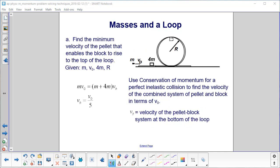Find the minimum velocity of the pellet that enables the block to rise to the top of the loop. So what we're looking for is this velocity right here. And by rising to the top of the loop, we mean it goes all the way up here. Then it doesn't have enough speed to get all around the loop, so it just falls down like that.